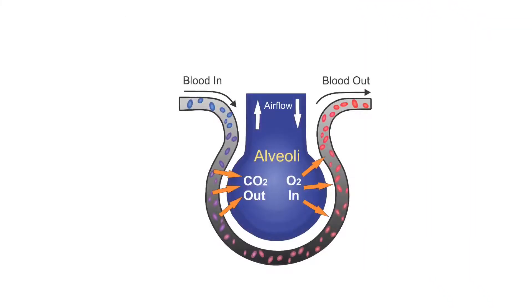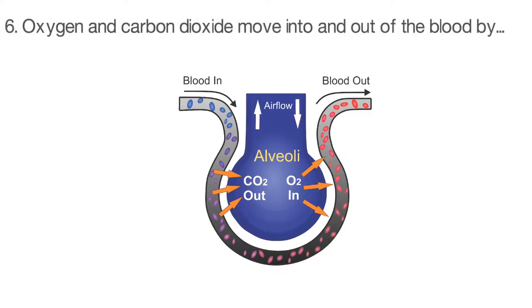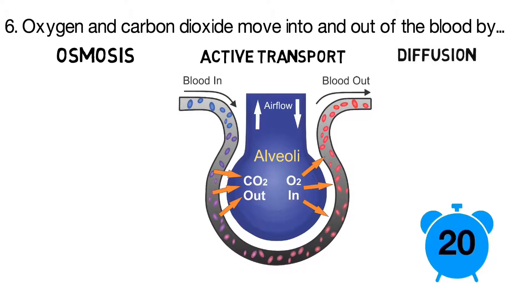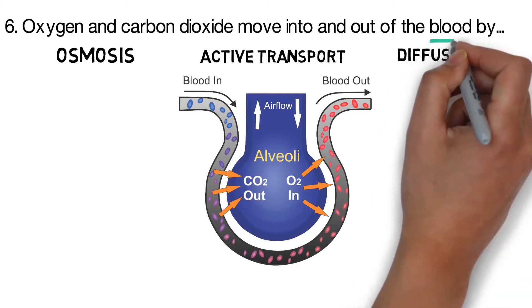Question number six: oxygen and carbon dioxide move into and out of the blood by? Is it osmosis, active transport, or diffusion? The correct answer is diffusion.